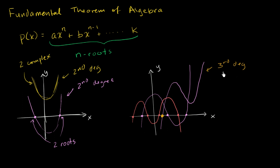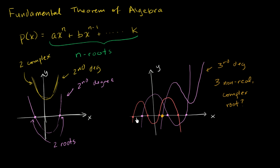Could you have a third degree polynomial with three non-real complex roots? The answer is no, because complex roots always come in pairs — they come as conjugates of each other. So you could have a fourth degree polynomial that has no real roots. In that case, you would have two pairs of complex roots, or four non-real complex roots, grouped into two conjugate pairs. We'll see that in the next video.